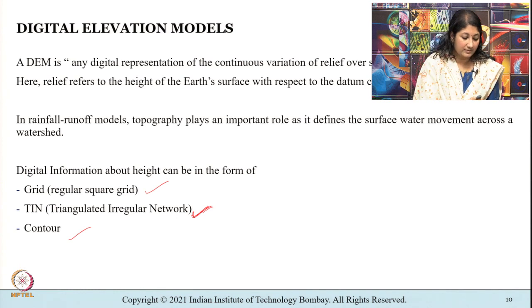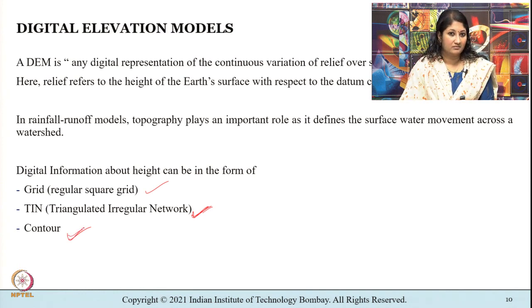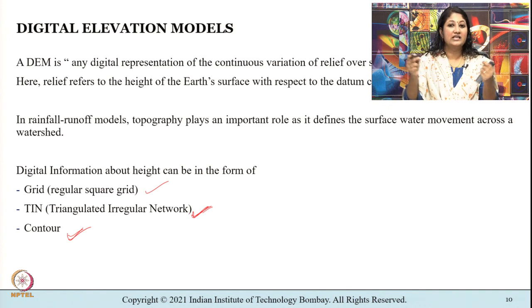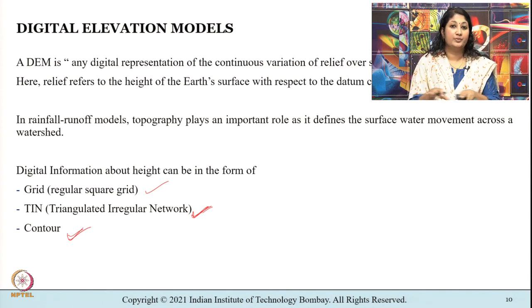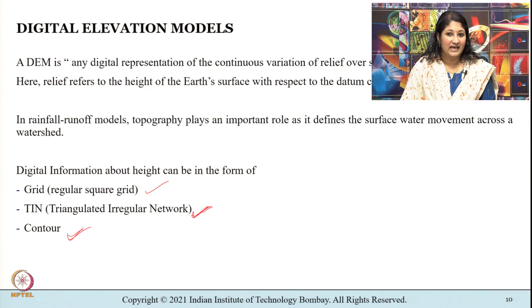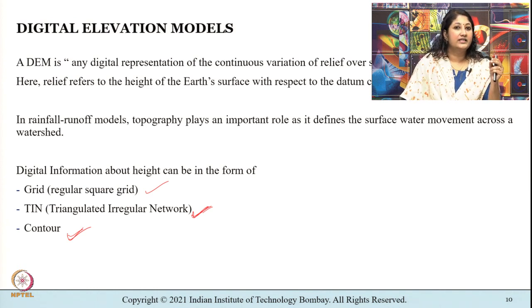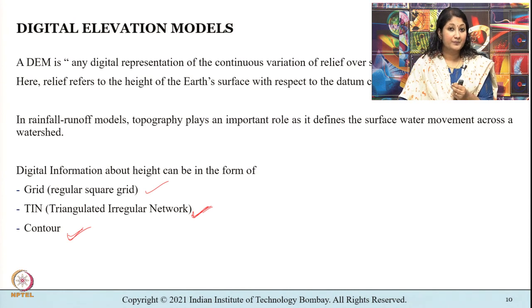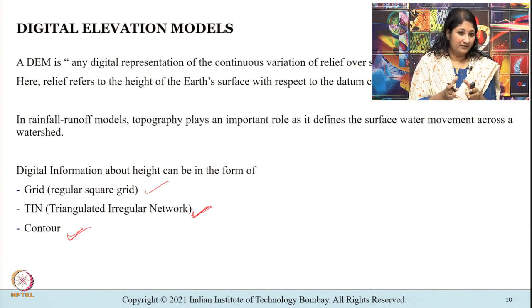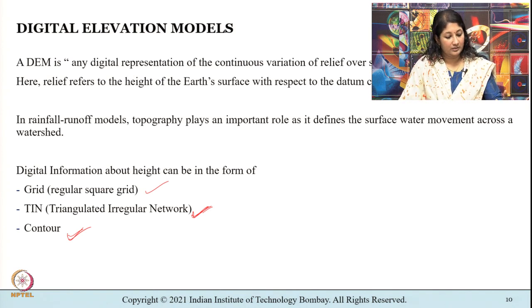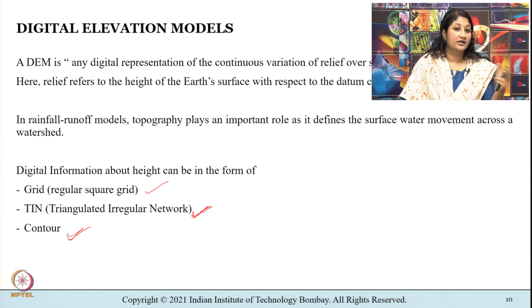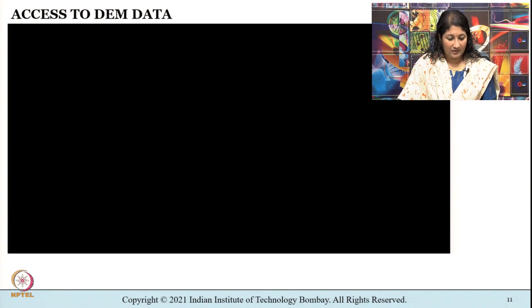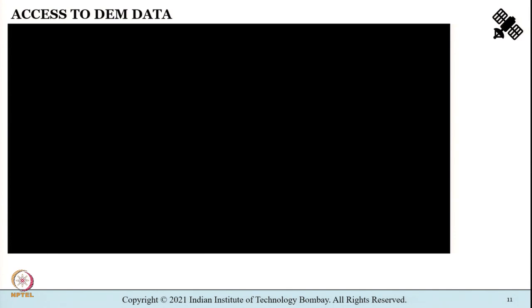TIN is created by running an algorithm over a raster to capture the nodes required; the Delaunay triangulation method is typically defined as the most preferred method for generating TIN. Contours represent points of equal elevation with respect to a particular datum and can be created by digitizing benchmarks from maps or directly from DEMs using contour options in image processing software like ArcGIS or IRIDAS.